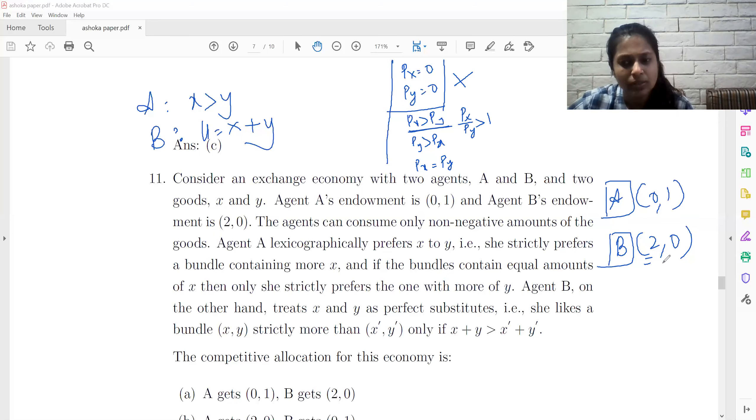Now that is not possible. So that means this price ratio PX by PY more than 1 is not possible. So we eliminate that too.